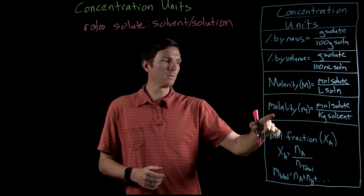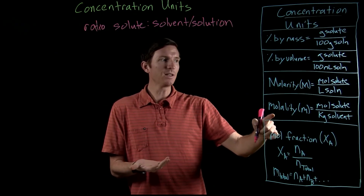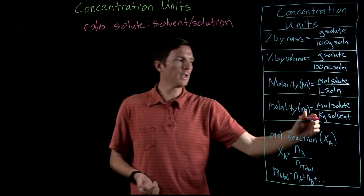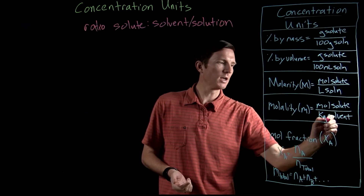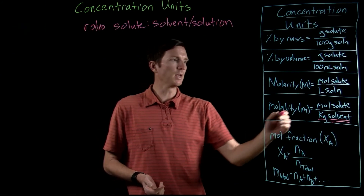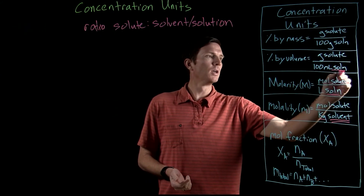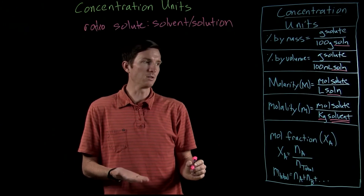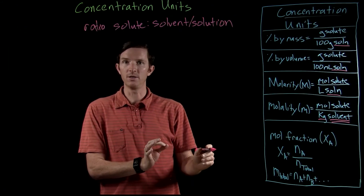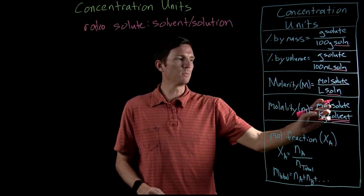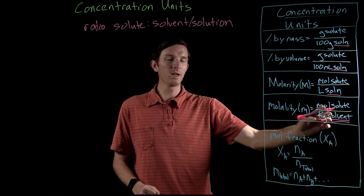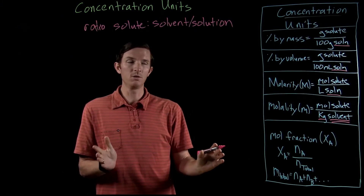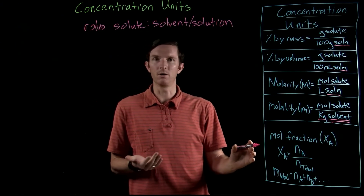Molality is very distinctly different from the rest — it's moles of solute per kilograms of solvent, not solution. Each of the other units relates the amount of solute per total solution amount, but molality looks at the ratio between moles of solute per kilograms of solvent, ignoring the amount of solute in the denominator.